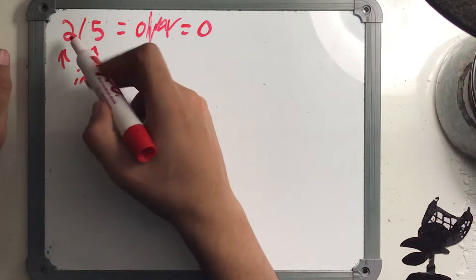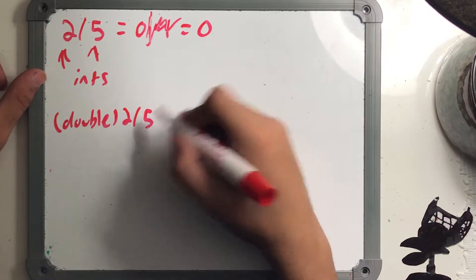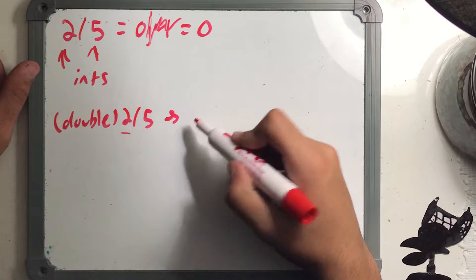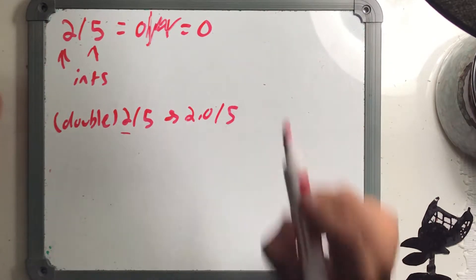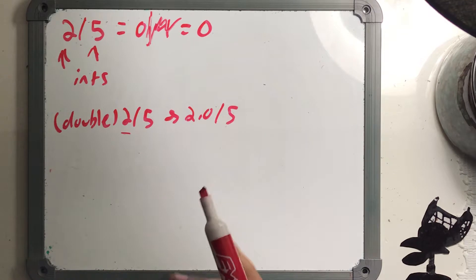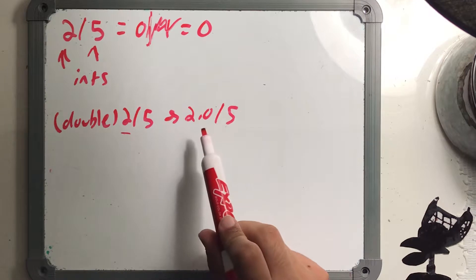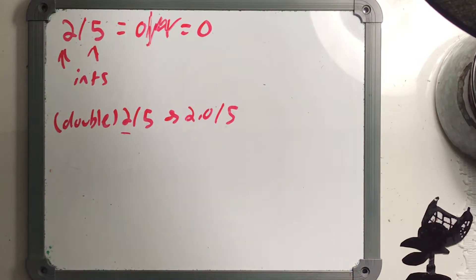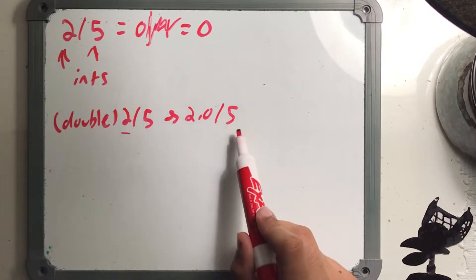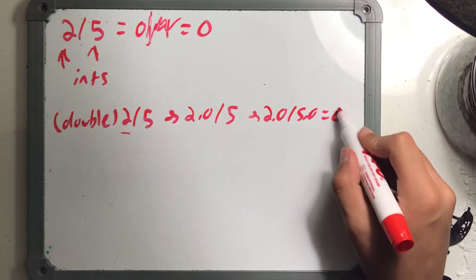To fix this, you can use typecasting. Write (double) before the 2, so it becomes (double) 2 / 5. The 2 becomes 2.0. Then, through type promotion, Java converts all operands up to the type of the largest operand. Since double has a size of 64 bits and can hold more memory, the 5 also becomes 5.0, giving you 2.0 / 5.0 = 0.4.